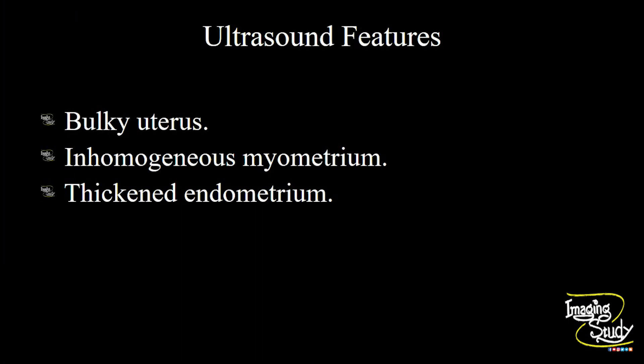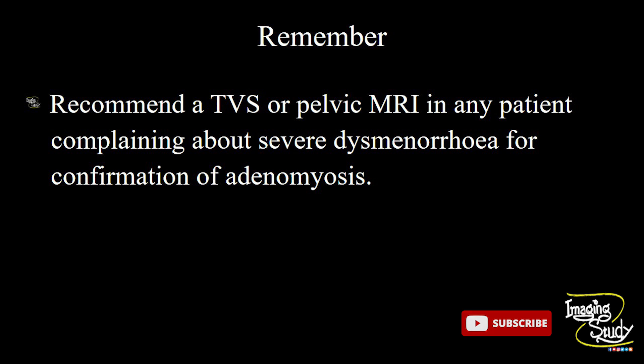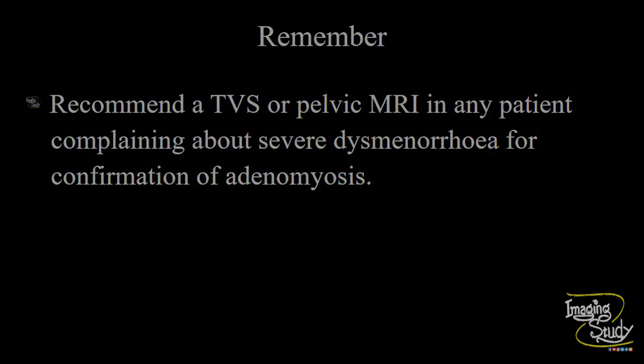In conclusion, the ultrasound shows a bulky uterus, inhomogeneous myometrium, and thickened endometrium. The take-home message: TVS or pelvic MRI is recommended in patients complaining of severe dysmenorrhea for confirmation of adenomyosis. This is a very common case and we can easily diagnose it with TVS or pelvic MRI. Don't waste time doing transabdominal ultrasound repeatedly — go for TVS or pelvic MRI for confirmation.